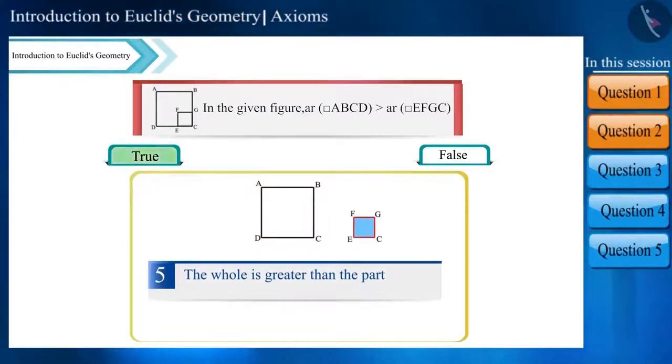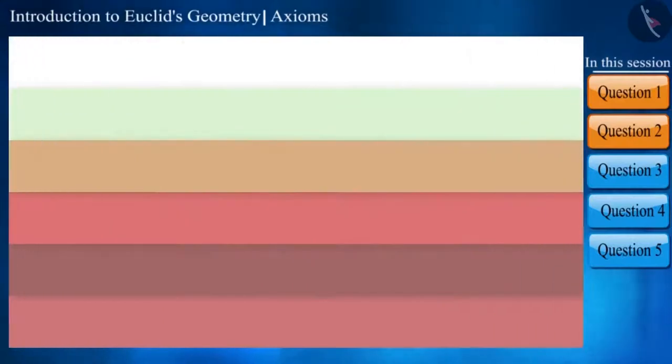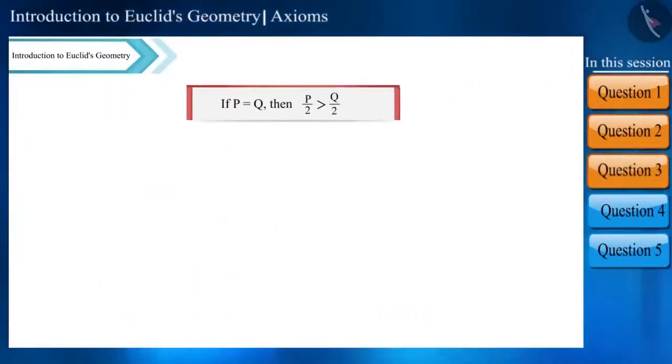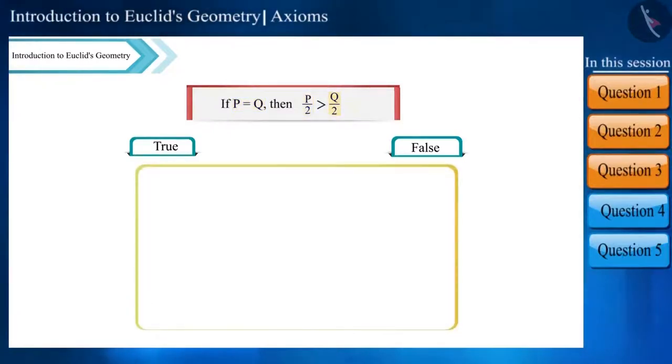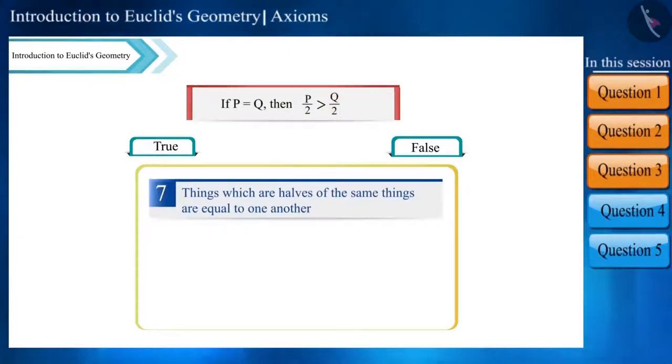Is the given statement true or false: if P equals Q, then half of P will be greater than half of Q? According to Euclid's seventh axiom, things which are halves of the same things are equal to one another. Here, P/2 equals Q/2, so this statement is false.